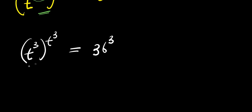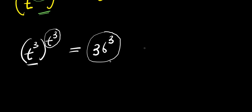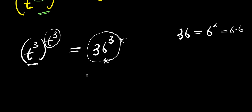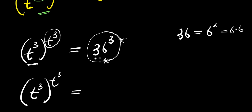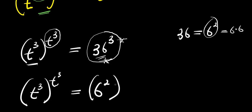If you observe the pattern here, t to the power of 3 is exactly the same thing we have at the exponent. So we are going to modify the right-hand side to have the same thing at the base and also at the exponent. Don't forget that 36 is also 6 to the power of 2. So we still have t to the power of 3 raised to the power of t to the power of 3, and this equals 6 to the power of 2, raised to the power of 3.